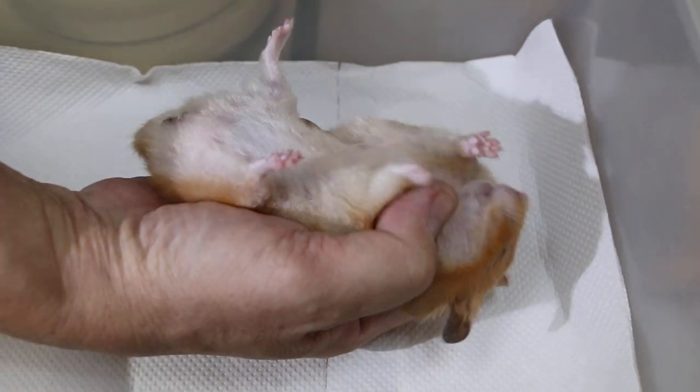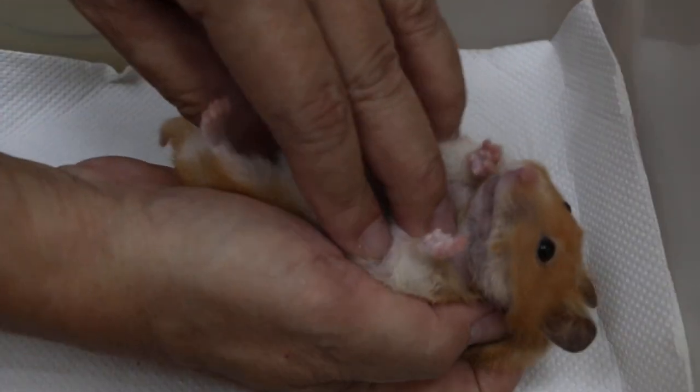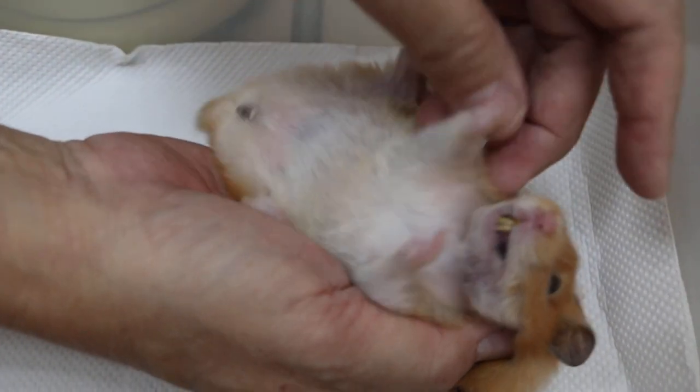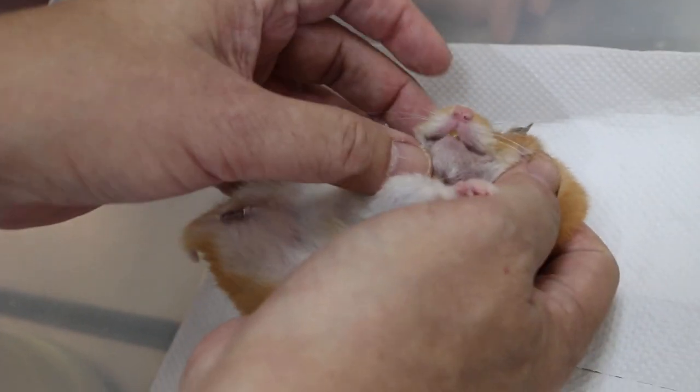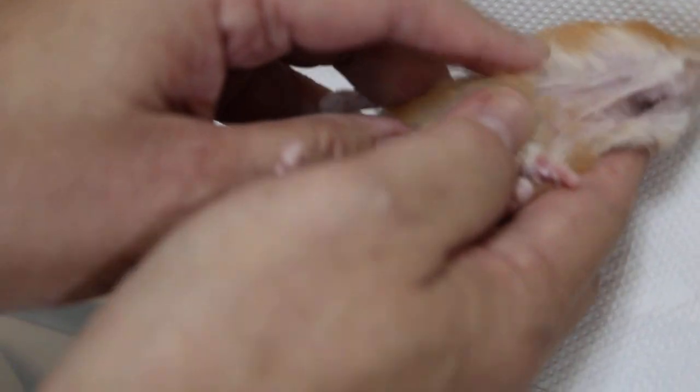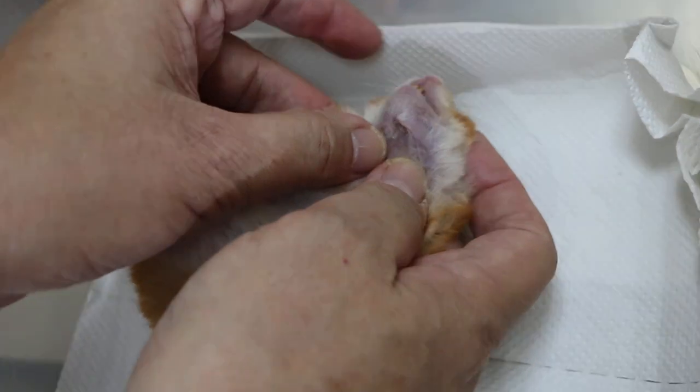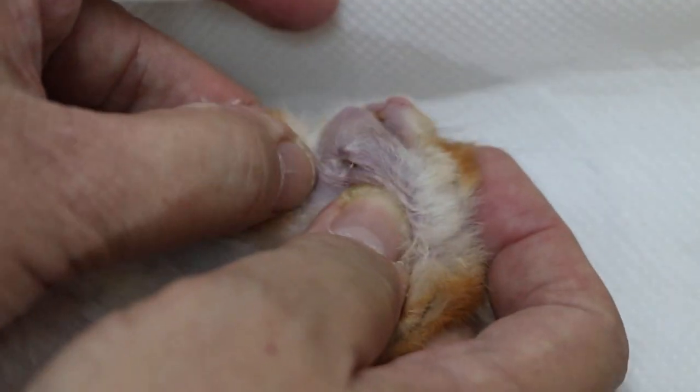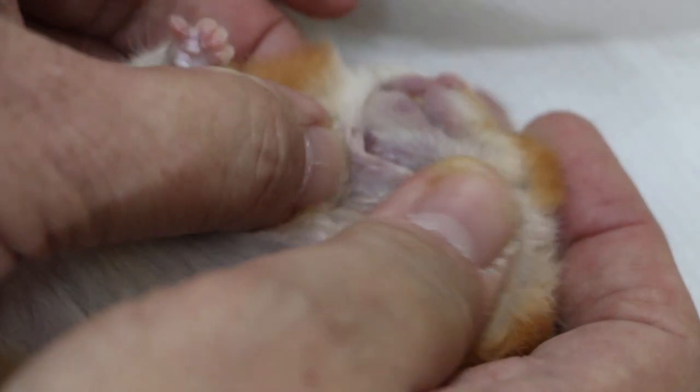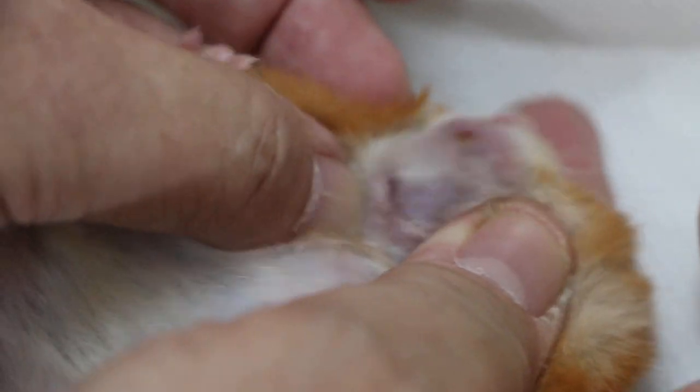She came back again for the complaint of the same condition. There's pus inside the swelling under the chin. But because the abscess was drained and the pus still is there, although it's about more than two weeks. According to the owner, there's still some pus coming out.